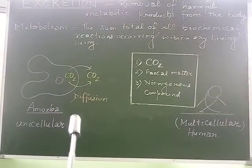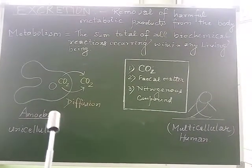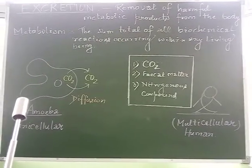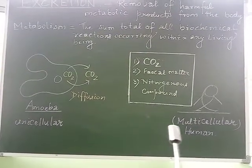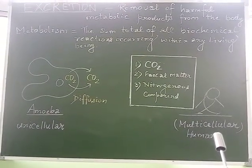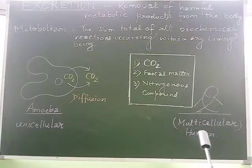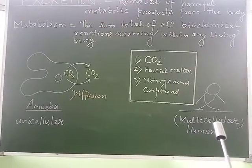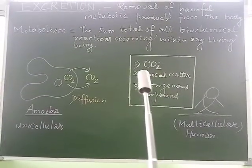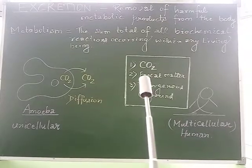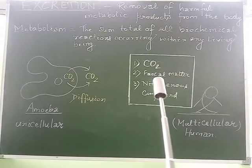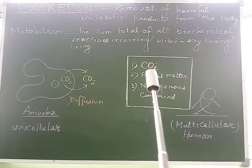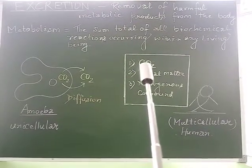In the case of unicellular organisms, they fulfill excretion through their general body surfaces. Whereas in multicellular living beings such as humans, there is a necessity for a certain type of system to fulfill the process of excretion. For example, carbon dioxide, which is a waste product formed during respiration, is released through our lungs via the nostrils.